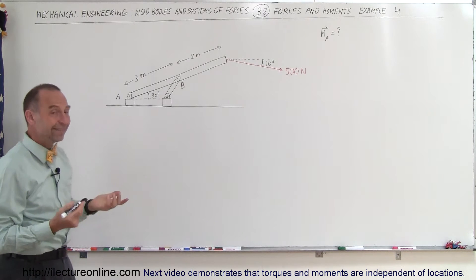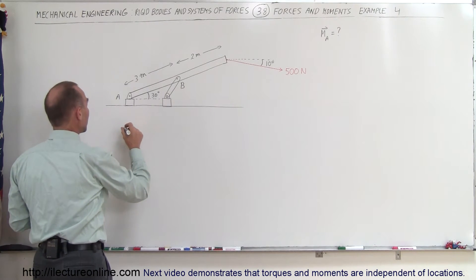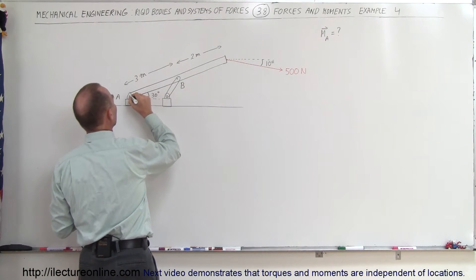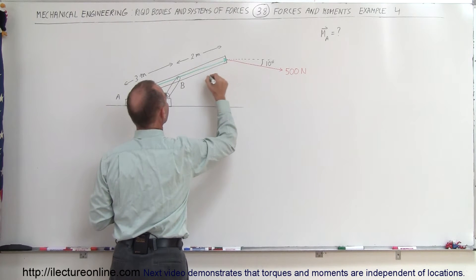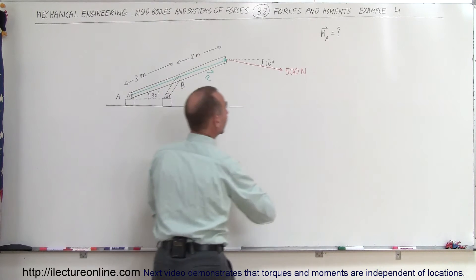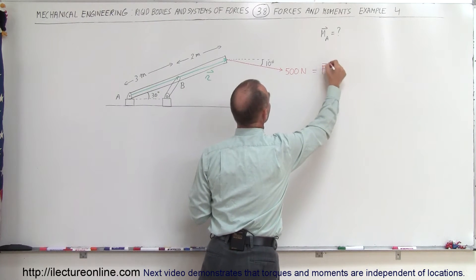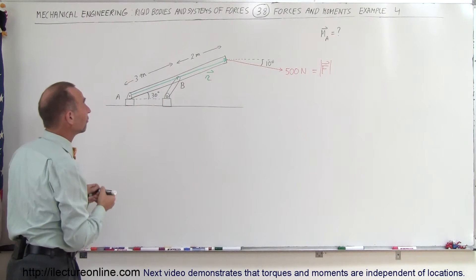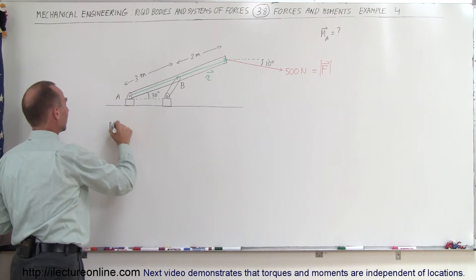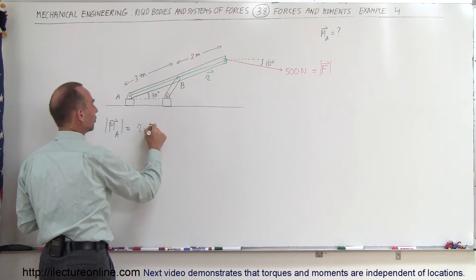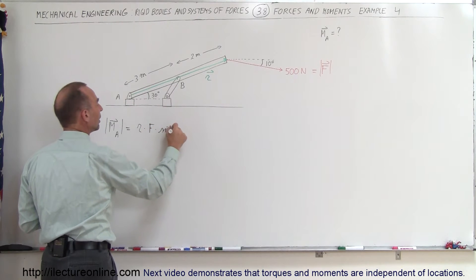With the easy technique, let me draw the position vector first. So if you want to draw the position vector, that would be this vector right here — this would be our R vector. And there would be the force, at least the magnitude of the force. To find the moment about point A, the magnitude of that would be equal to the magnitude of the position vector times the magnitude of the force times the sine of the angle between the two.